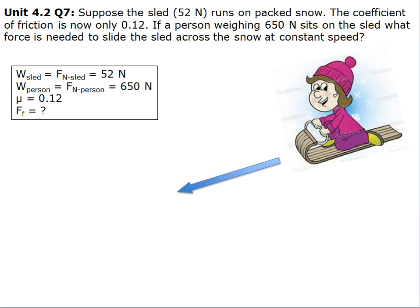We have the weight of the sled, which equals the net force of the sled, which equals 52 newtons. We also have the weight of the person, which equals the net force of the person, which equals 650 newtons.